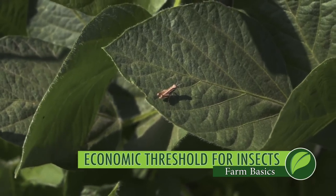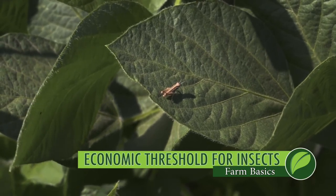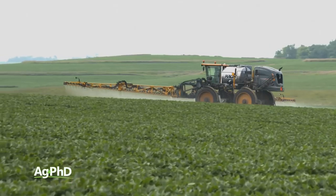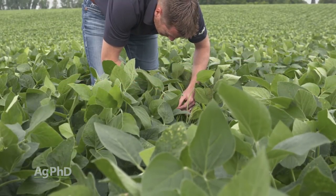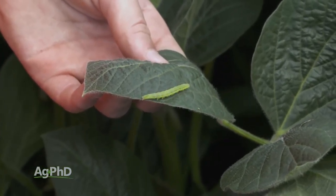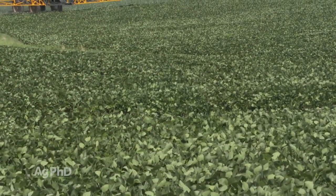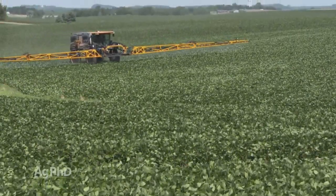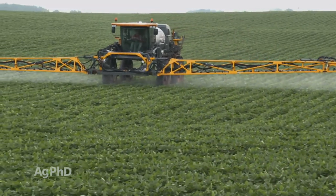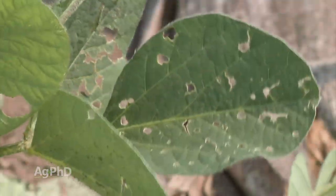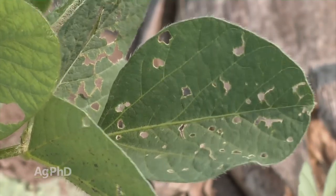During our Farm Basics time today we're going to talk about what is an economic threshold for insects, and why do farmers even have to spray insecticide? When farmers see bugs out in the field they're often thinking, how many bugs is my threshold where a spray application would be justified? Well the economic threshold really determines it by dollars and cents. So if there are bugs out in your field causing ten dollars worth of damage and it costs five dollars to spray, clearly we've reached an economic threshold.